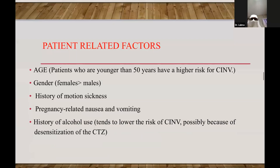Now we will talk about risk factors which lead to nausea and vomiting in patients receiving chemotherapy. These factors can be divided into patient-related and treatment-related factors. Patient-related factors include age — the younger the patient, the higher the chances of chemotherapy-induced nausea and vomiting. Females are more prone. Patients with a history of motion sickness or pregnancy-related nausea and vomiting are at higher risk. Alcohol use actually leads to lower risk, possibly due to desensitization of the chemotherapy trigger zone.